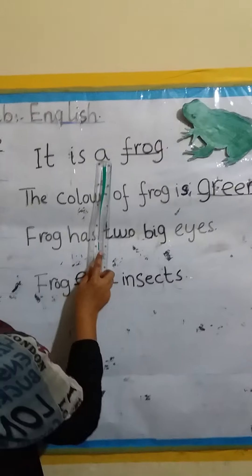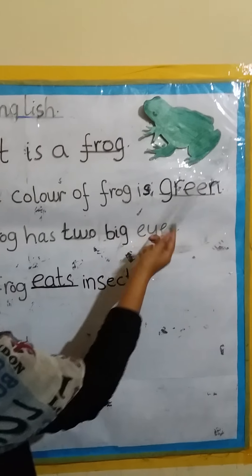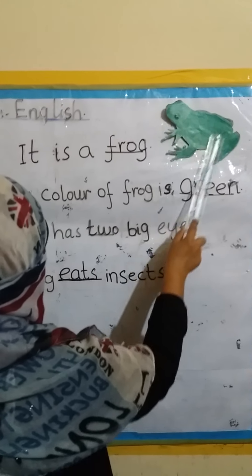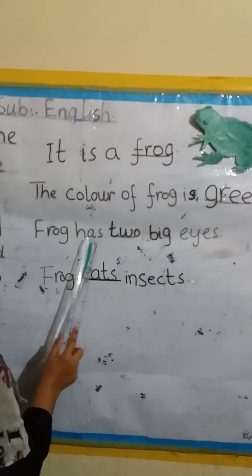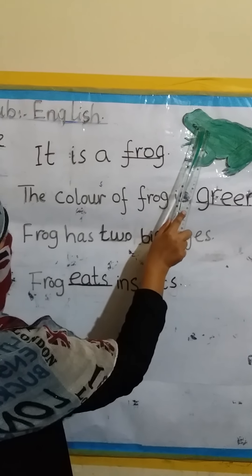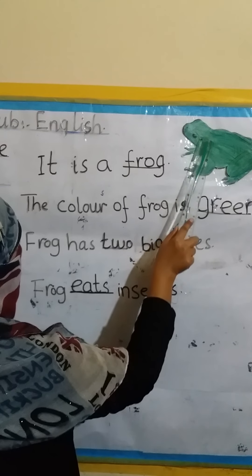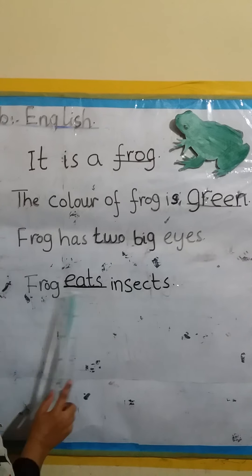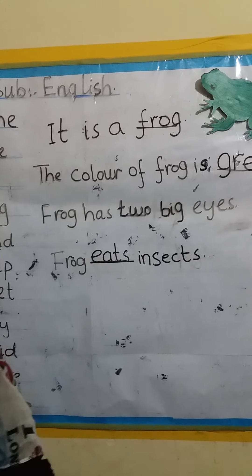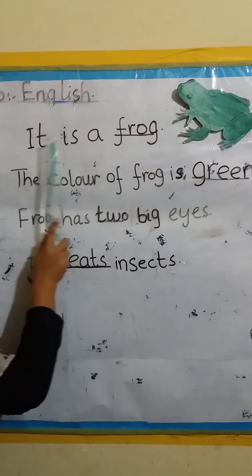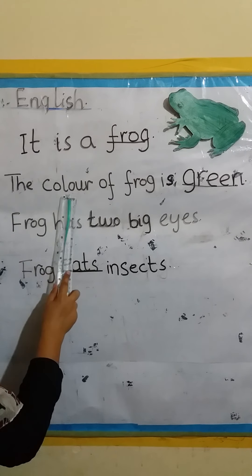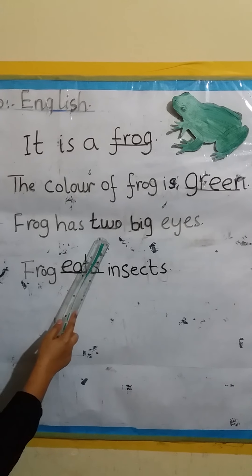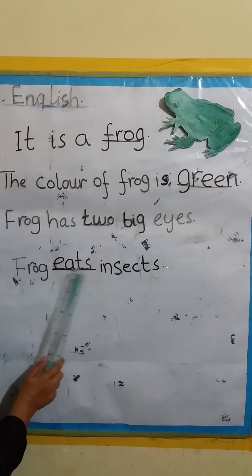It is a frog. The color of frog is green — you can see that the color of frog is green. Frog has two big eyes. Frog eats insects. We will revise it again: It is a frog. The color of frog is green. Frog has two big eyes. Frog eats insects.